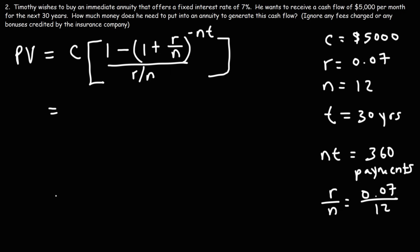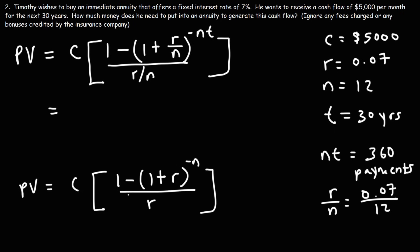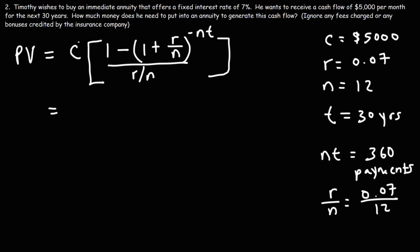Keep in mind: if interest were credited on an annual basis instead, we'd use the original formula, where the cash flow would be $12,000 per year — still equivalent to $1,000 per month — r would be 0.06, and n would be 30 years. But since interest is credited monthly, the cash flow must be the monthly amount and we divide r by 12.